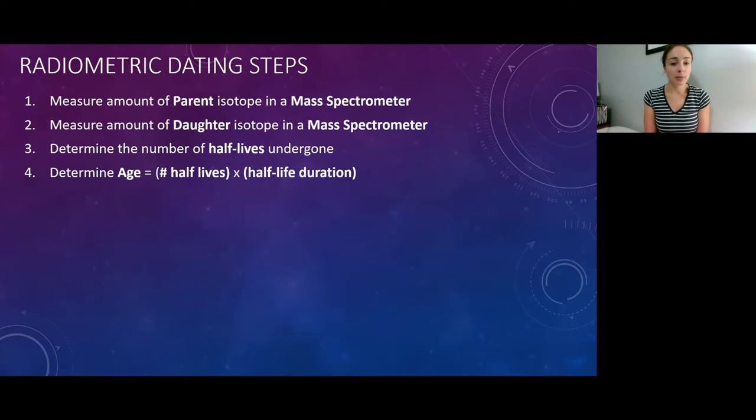The way that you would apply radiometric dating is you would measure the amount of parent isotope in a mass spectrometer, you would measure the amount of daughter isotope in a mass spectrometer, and then you would determine the number of half-lives that have gone by by this parent-daughter ratio, and then you would determine the age by multiplying the number of half-lives that have gone by by the half-life duration that you know because you can look it up.